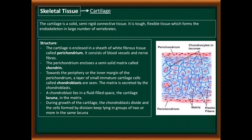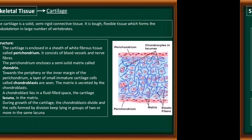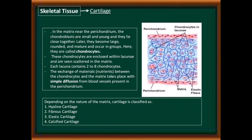During growth of the cartilage, the chondroblasts divide and the cells formed by division keep lying in groups of two or more in the same lacuna. Near the perichondrium, the chondroblasts are small and young and lie close together. Later they become large, rounded, and mature and occur in groups — at this stage they are called chondrocytes.